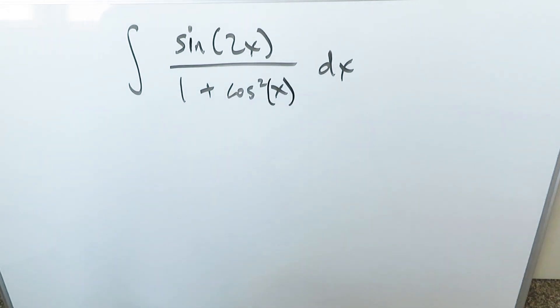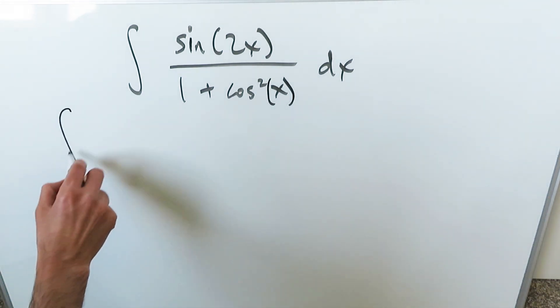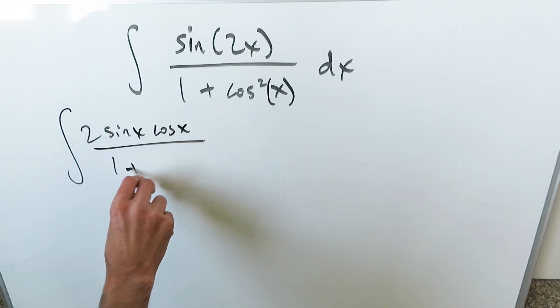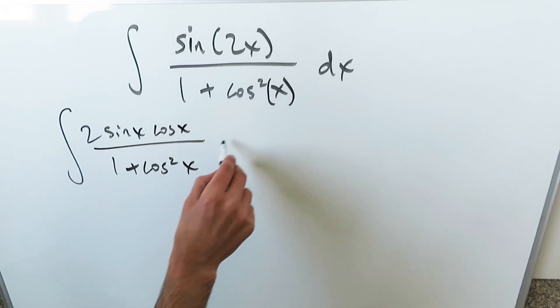If you remember trigonometric identity, that numerator sine 2x can be rewritten as 2 sine x cosine x divided by 1 plus cosine squared x dx.